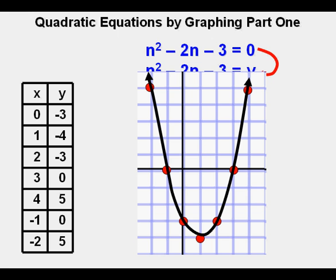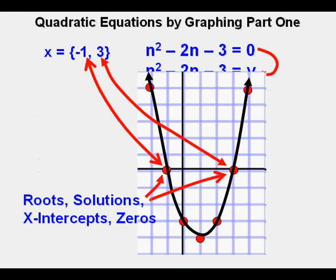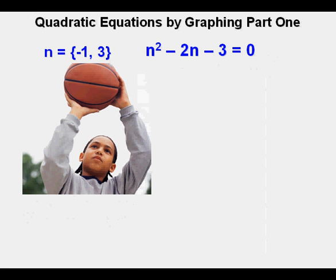After graphing, he can pinpoint the solutions where the function crosses the x-axis at x = -1 and x = 3. These solutions are also called roots, x-intercepts, and zeros. Going back to the original unknown, n, he says that the solutions for his original equation are n = -1 and n = 3.